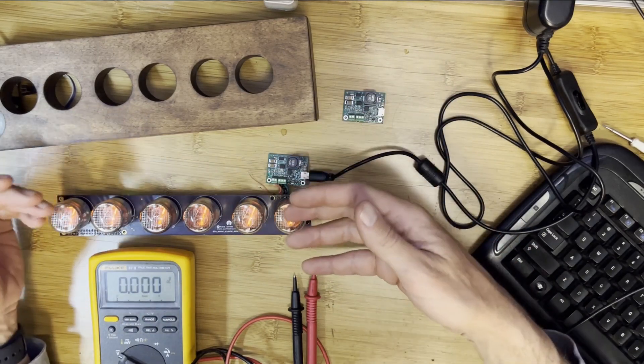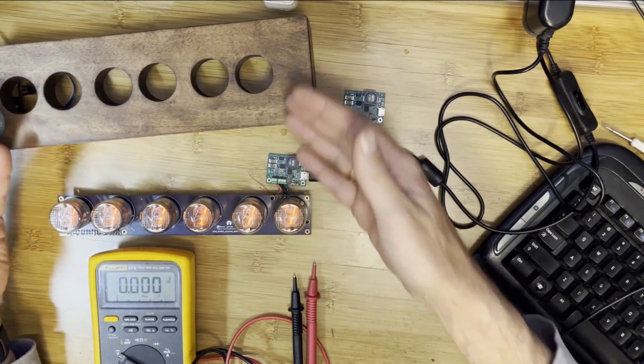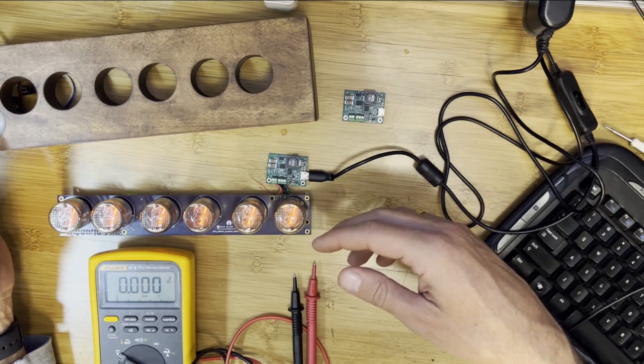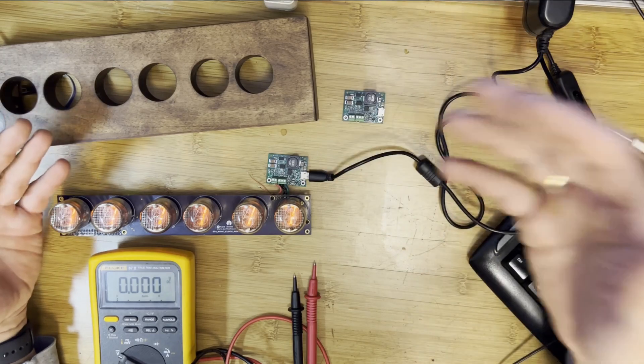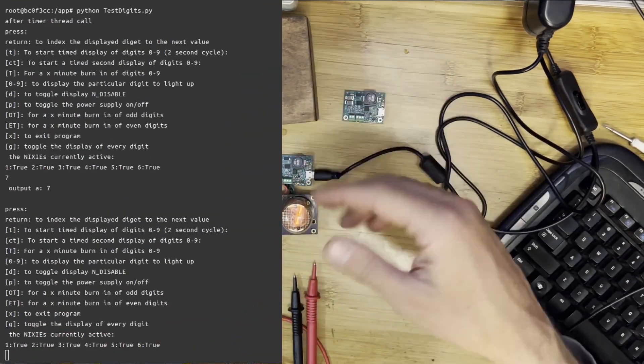Now this is the second setup, and this is an actual setup using the ETA Nixie tube clock, a topic of a previous blog that I have on my site. I'm actually running some test software here up on the screen that's allowing me to look at particular digits.